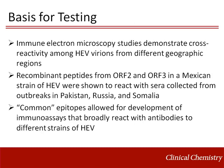Enzyme immunoassays can be used to test for antibodies to hepatitis E in the blood. The basis for that testing comes from early studies showing that there was cross-reactivity among hepatitis E virions from different geographic regions and, therefore, genotypes. It has also been shown that recombinant peptides from both ORF2 and ORF3 from a Mexican strain of hepatitis E were able to react with sera collected from outbreaks in Pakistan, Russia, and Somalia — different genotypes. These findings provided evidence for common epitopes, facilitating the development of immunoassays that broadly react with antibodies to different hepatitis E strains.